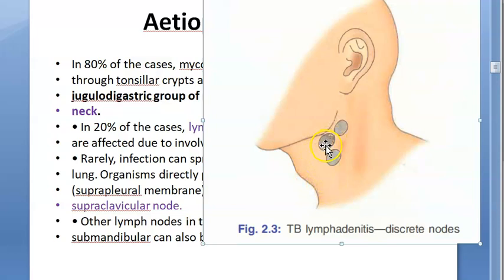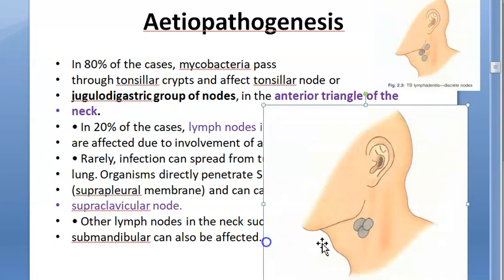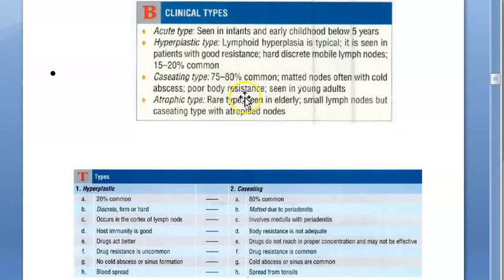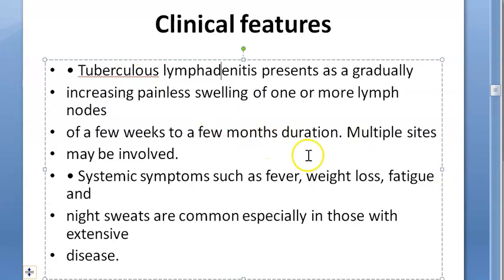They are showing that discrete nodes get involved and then become matted. Matted lymph nodes mean you can be very sure of tuberculosis.